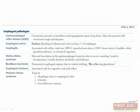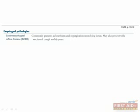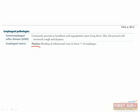Here we have a list of some well-known esophageal pathologies. Gastroesophageal reflux disease, or GERD, is our medical term for heartburn, which can include regurgitation upon lying down. Even if a patient presents with nocturnal cough and dyspnea, GERD should definitely be a consideration on your differential. Esophageal varices, mentioned before in the context of portosystemic anastomosis, is painless bleeding of the submucosal veins in the lower one-third of the esophagus, and is a common source of upper GI bleed in patients with liver disease.